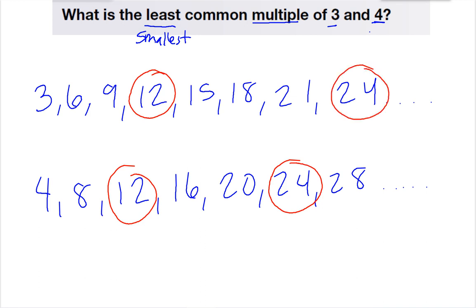Now if I kept going, I would keep finding more multiples. So I'm looking for the least or smallest multiple, which is the number 12. So 12 is my least common multiple.